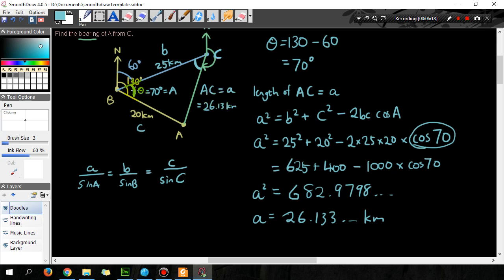So side a over angle A. So side a is 26.13 kilometers. Angle A is 70 degrees. And we don't need the middle section. So we have angle C is what I'm trying to find, so I'll leave that as unknown, and side c is 20 kilometers.